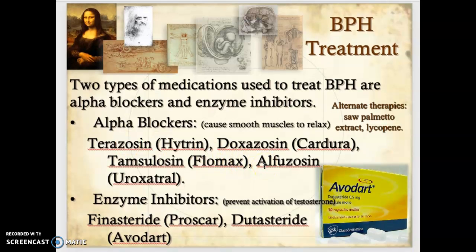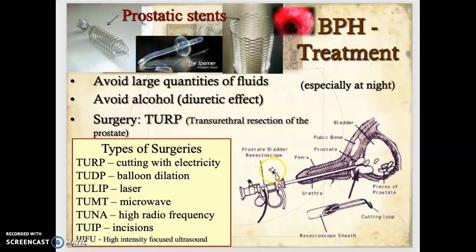Treatment begins with medications: alpha blockers relax smooth muscle, and enzyme inhibitors prevent testosterone from converting into dihydrotestosterone. If medications no longer work, surgery is considered. The classic surgery is TURP — transurethral resection of the prostate — where electricity or cautery is used through a scope to essentially 'roto-rooter' out the prostate. Other options include balloon dilation, laser, microwave, radio waves, incisions, and ultrasound.